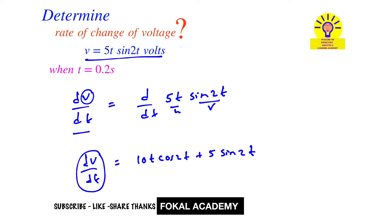We want the dv/dt value at t equals 0.2 seconds. Now substitute t = 0.2 seconds in this equation.